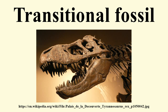Indeed, Archaeopteryx was discovered just two years later, in 1861, and represents a classic transitional form between dinosaurs and birds. Many more transitional fossils have been discovered since then, and there is now abundant evidence of how all classes of vertebrates are related, much of it in the form of transitional fossils. Specific examples include humans and other primates, tetrapods and fish, and birds and dinosaurs.